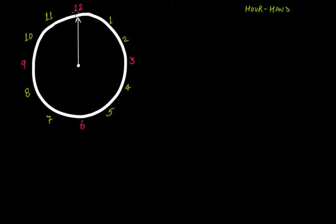If this hour hand starts rotating and takes a turn, it reaches here — and we know that this will be a right angle. So this is a right angle. Then it takes another right angle and reaches at six.